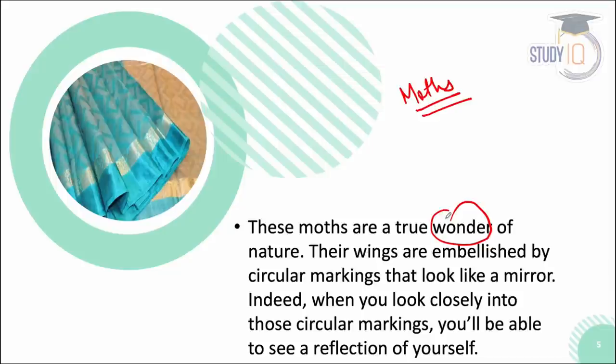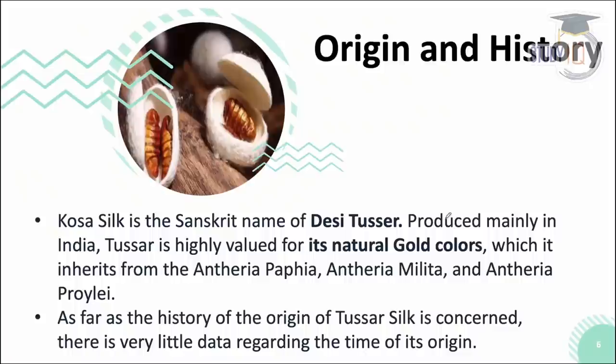If you look closely at the wings of this moth, you can see circular markings that appear almost like a mirror reflection. Now, talking about the origin and history — the Sanskrit name for this silk is Kosa silk, referring to the land, and it is mainly produced in India.